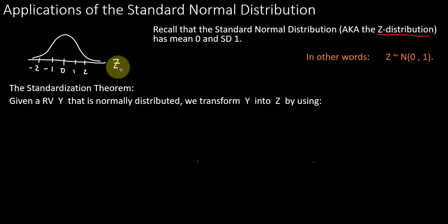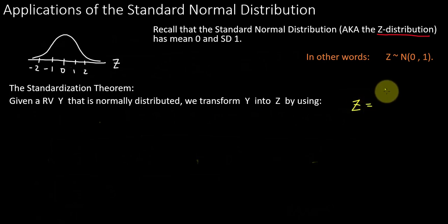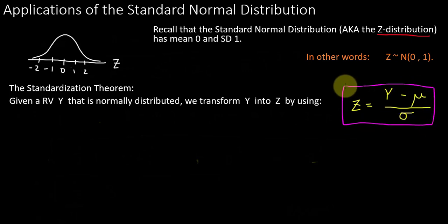We've got this little theorem. Basically, the punchline is that we can transform our random variable into Z by using the following formula: Z equals your random variable — call it X, call it Y, doesn't matter — you subtract the mean from that value of your random variable and divide by the standard deviation. This is a formula we're going to use a lot, and we'll see even different versions of it in the near future.